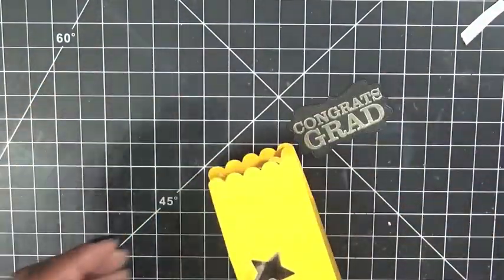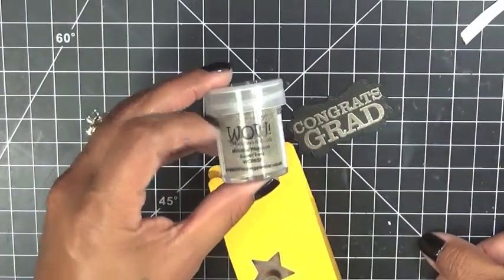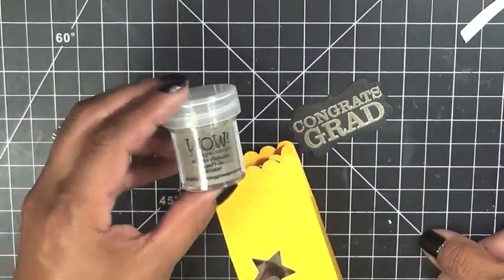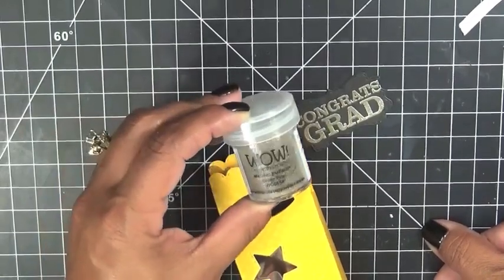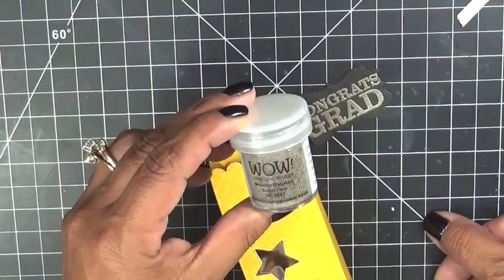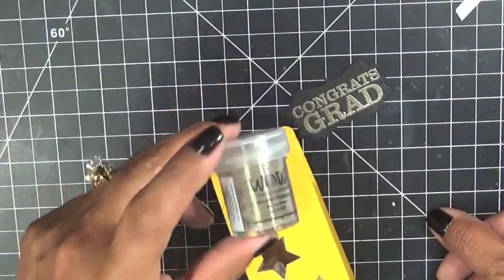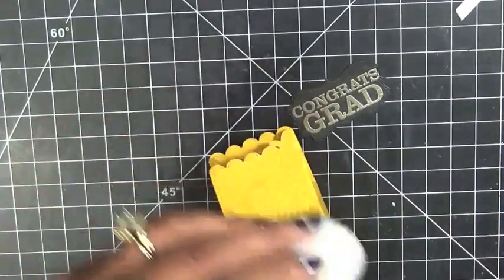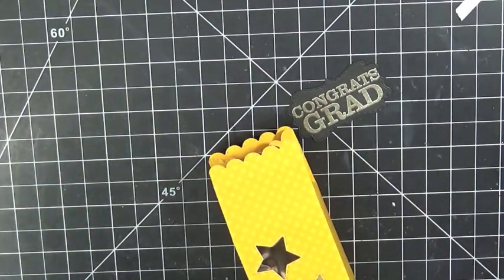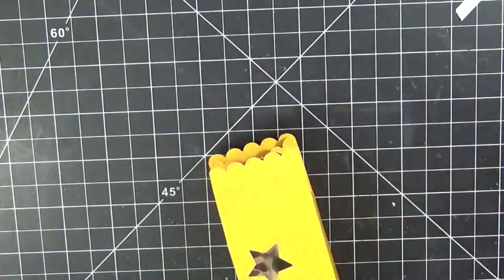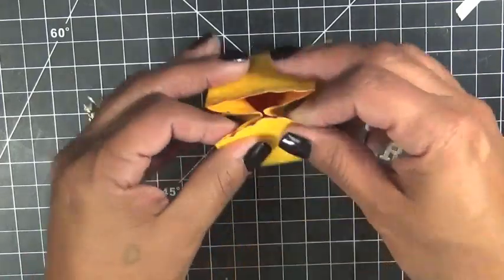Now I use this one here. I wish it was actually a little bit more shinier, but it'll work for me. This is the WOW Metallic Platinum Superfine. I love Superfine. I love Superfine. Anytime I could find Superfine little embossing powder, I'm all over it because I love the Superfine.